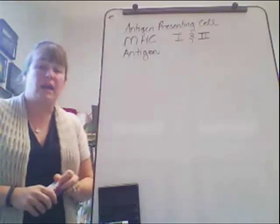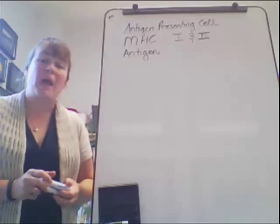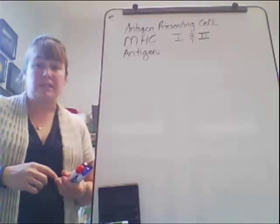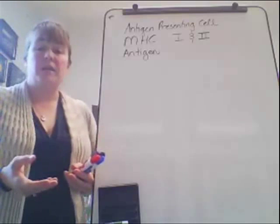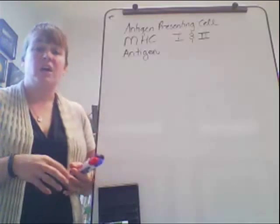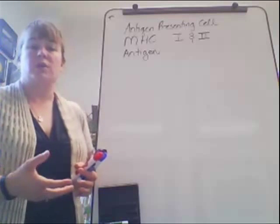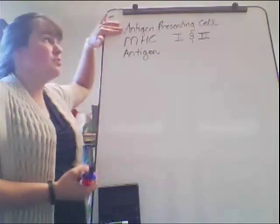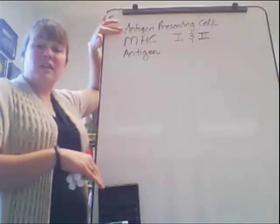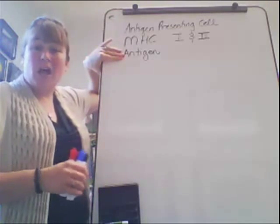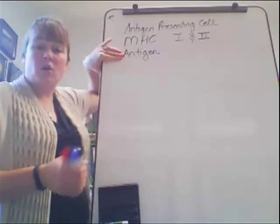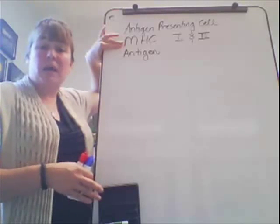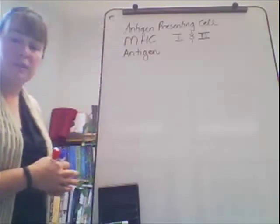We're going to talk about MHCs — type 1 and type 2. MHC stands for major histocompatibility complex. These are proteins produced by antigen presenting cells, coded on chromosome 6, and created through transcription and translation. They are then combined with antigens. The antigen presenting cell digests a foreign cell, creates small antigen fragments, combines them with a major histocompatibility protein, and plugs the complex into its surface.